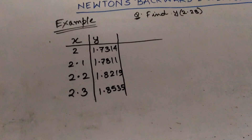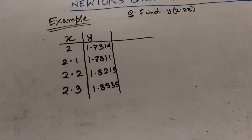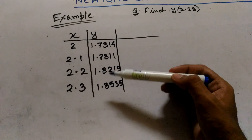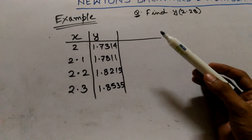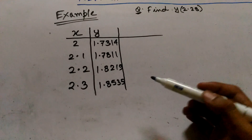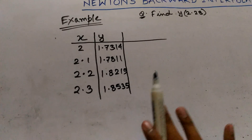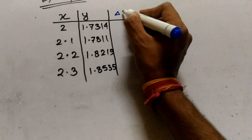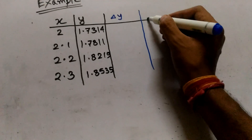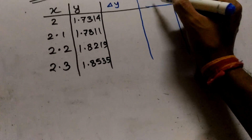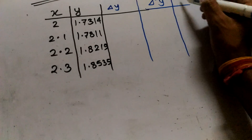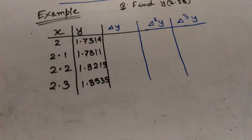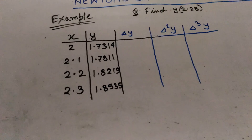We will construct the columns Δy, Δ²y, and Δ³y. Because there are four elements, the maximum power is n minus 1, which is 4 minus 1 equals 3. So we need Δy, Δ²y, and Δ³y. Now we will fill up the columns.